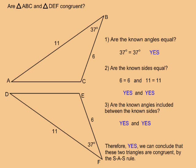Question 2: are the known sides equal? Both triangles have a 6 unit side and both triangles have an 11 unit side. So yes, the known sides are equal.